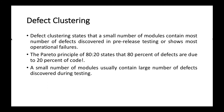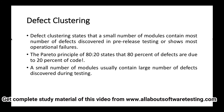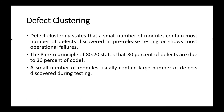A small number of modules usually contain a large number of defects discovered during testing. For example, in a whole application with 10 modules, it is very likely that only 4 modules will contain most of the defects of the entire software.